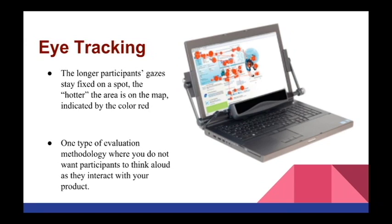The next evaluation method is eye tracking, which was first used in cognitive psychology. However, the HCI community has adapted it to study where people look, or in this case, perhaps do not look, for information or functionality and for how long. Additionally, it is one type of evaluation methodology where you do not want participants to think aloud as they interact with your product. As demonstrated here with this image, the longer participants gaze or stay fixed on a spot, the hotter the area is on the map, thus indicated by the color red.